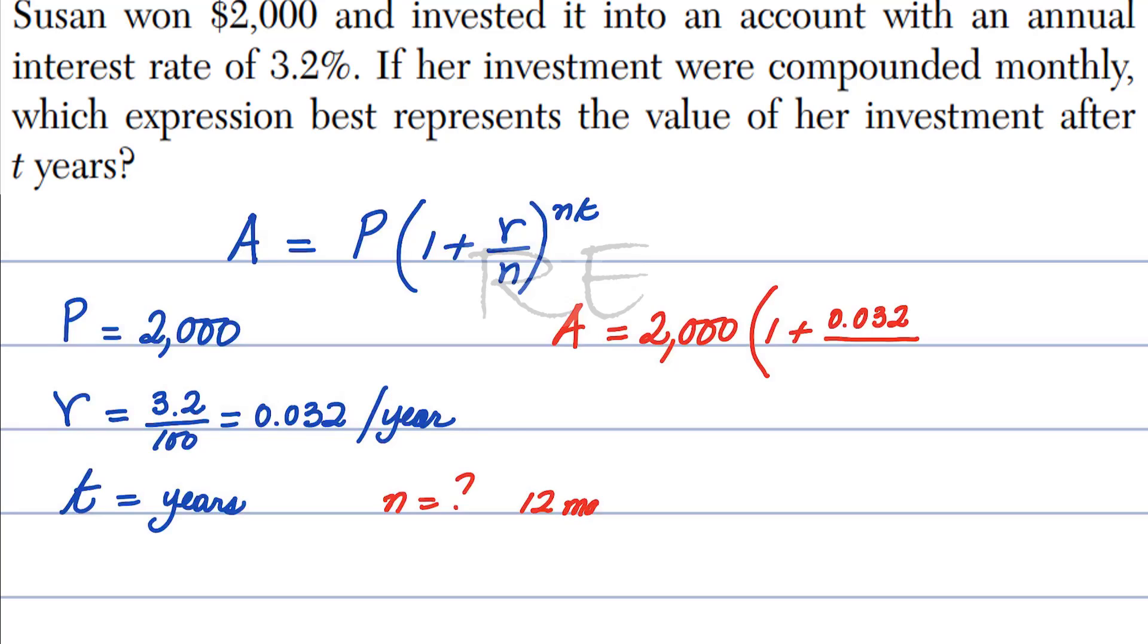So if it's compounded monthly and the year has 12 months, N is going to be 12 months. So N is going to be 12, raised to Nt, 12 times t.